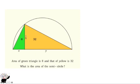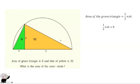We can see that both triangles share the same height. So the area of the green triangle is half base times height — that is half X times H — and we already know the area of the green triangle to be 8. So we get half X times H equals 8.